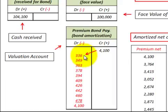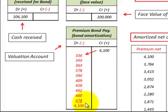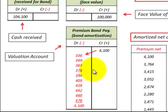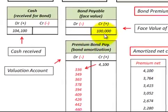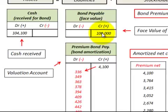Each period with our semi-annual interest payment on this bond, we also have to amortize this premium down — we make a charge on this premium such that at the end of the period we've used up all the premium. The debit amount of $4,100 equals the credit amount of $4,100, they zero out, the valuation account becomes zero, and our bonds payable is $100,000 — what we're looking for on the balance sheet at the maturity date.